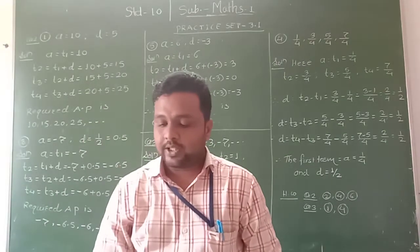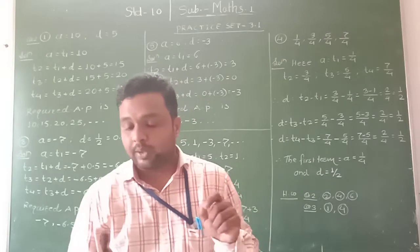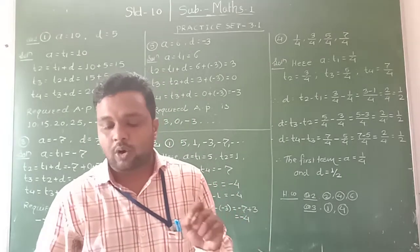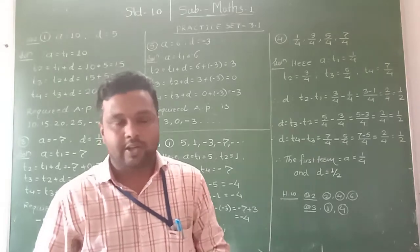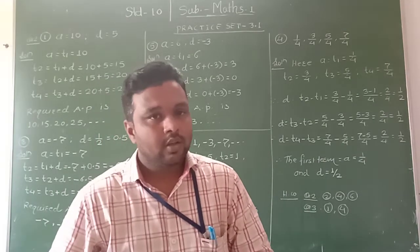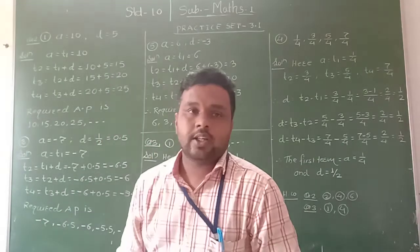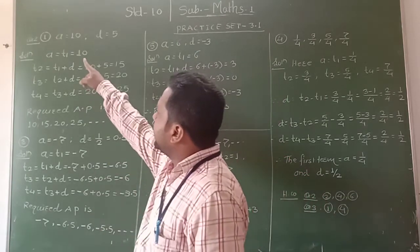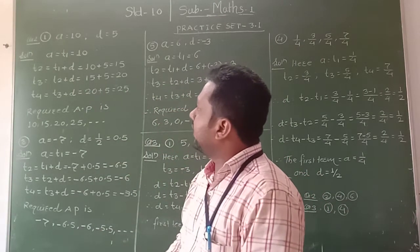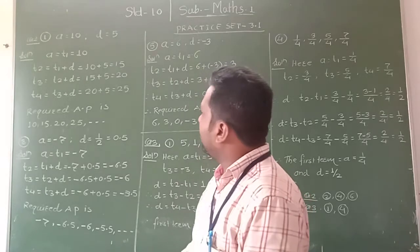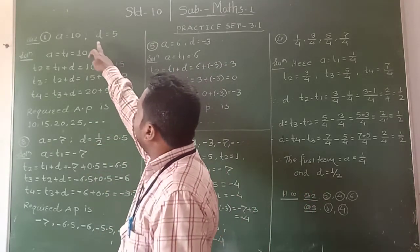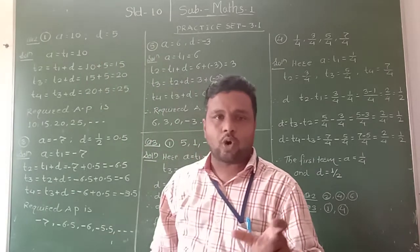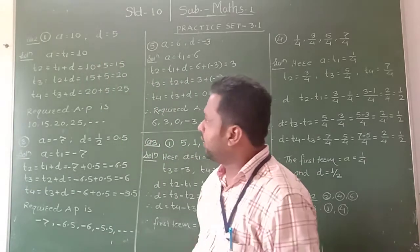The second question asks: write an arithmetic progression whose first term is A and common difference is D. Here I take the first example. The first term A is equal to 10, and the common difference D is equal to 5. From that, we have to form the arithmetic progression.